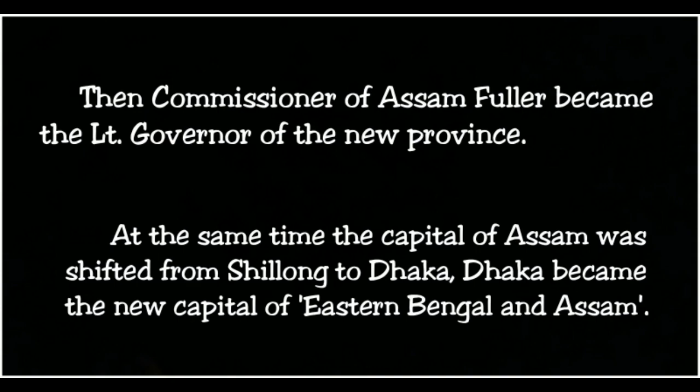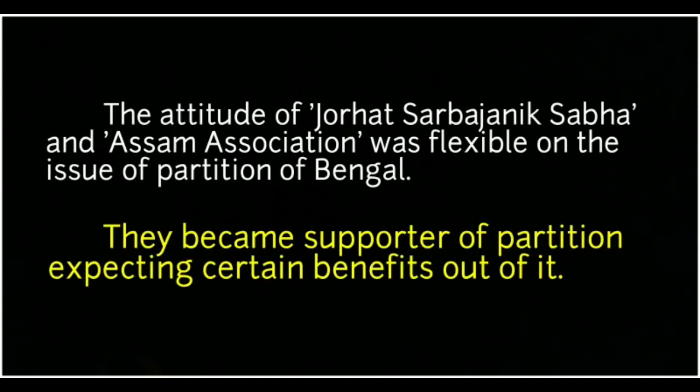Dhaka became the new capital of the new province Eastern Bengal and Assam. The attitude of the Jorhat Sarbajanik Sabha and the Assam Association was flexible on the issue of the Partition of Bengal — they became supporters of the partition, expecting certain benefits out of it.